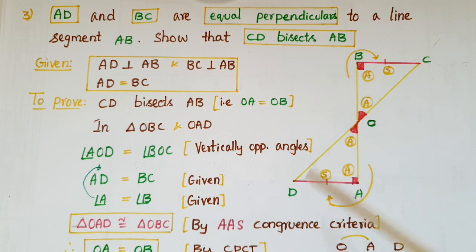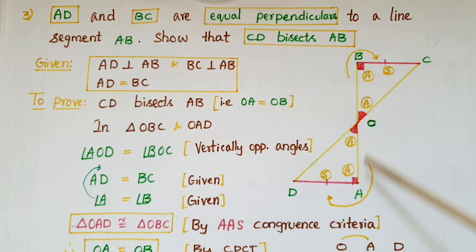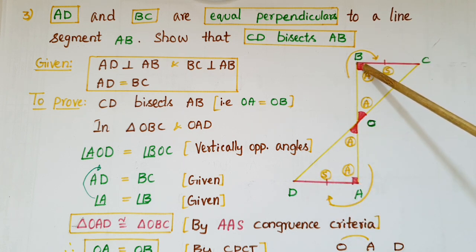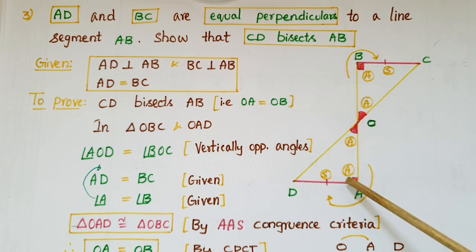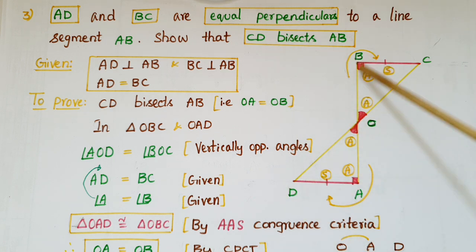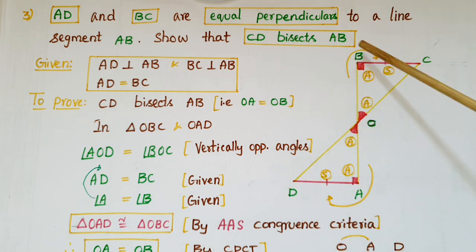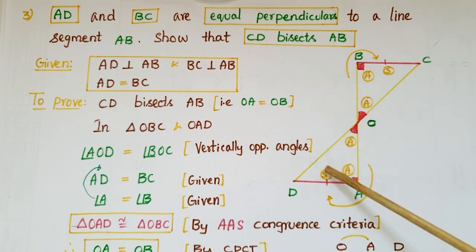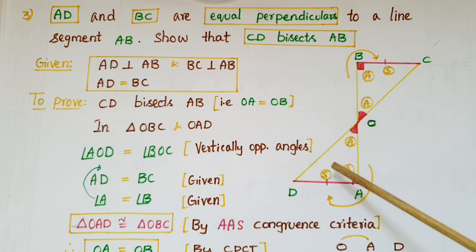This is the third problem. AD and BC are equal perpendiculars to a line segment AB. So BC is equal to AD, and these two angles are 90 degrees because these two lines are perpendicular to AB. We have to show that CD bisects AB, which means we have to prove that OB is equal to OA. These two lengths are parts of the two triangles, so we have to use congruence criteria to prove these two triangles congruent.